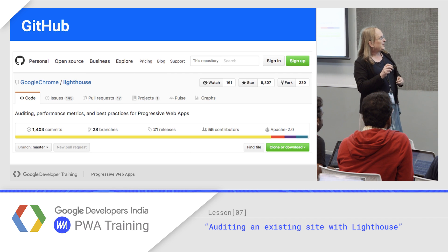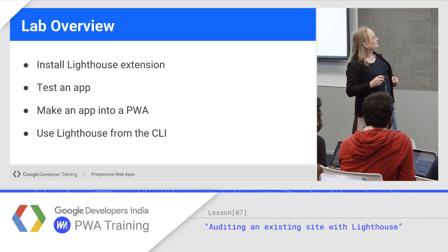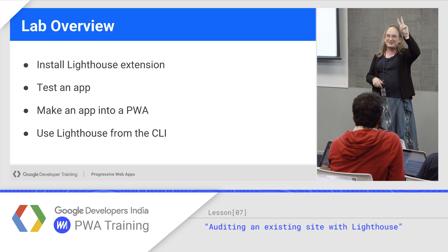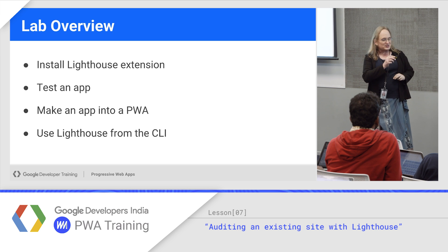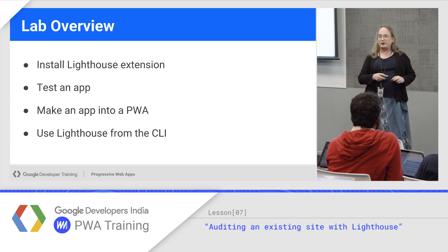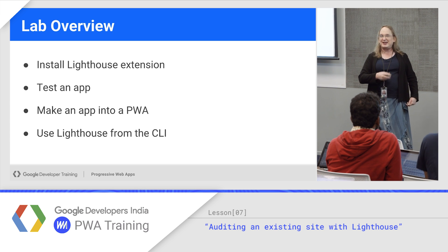If you want to make changes, it's at Google Chrome slash Lighthouse on GitHub. For the lab, which is a super short section, you're going to install the Lighthouse extension in Chrome, test an app, take that app and turn it into a progressive web app just like you did in the previous lab, and then run the test again.